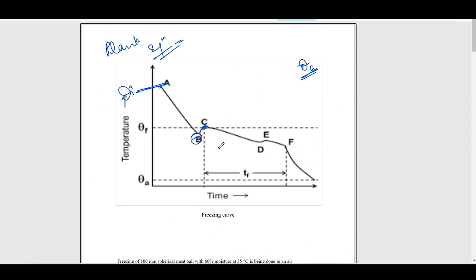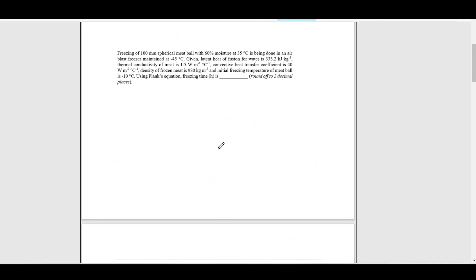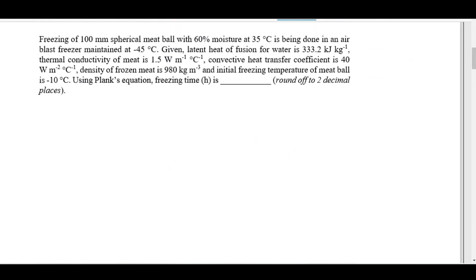Now let's solve a question based on this formula — it is a GATE question from 2017 or 2018. The question involves freezing of a 100 mm spherical meatball. The moisture content is 60% and it is initially at 35 degrees Celsius. It is put into an air-blast freezer maintained at minus 45 degrees Celsius. Given: latent heat of fusion for water is 333.2 kJ/kg, and thermal conductivity of the meat is 1.5 W/m·K.